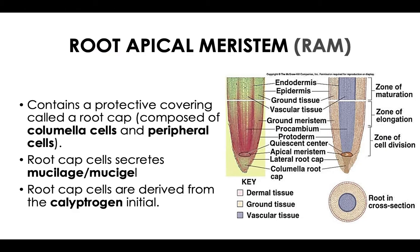The root apical meristem, aside from producing the primary root, also has a protective portion known as the root cap at the same terminal region. Root cap cells are composed of columella cells and peripheral cells. Root cap cells secrete a mucilage or mucigel to serve as a lubricant as the root traverses down the grainy and rough soil substrate. Root cap cells are derived from the calyptrogen initial — they are not direct descendants of the RAM and have their own initials.